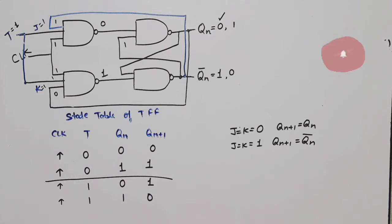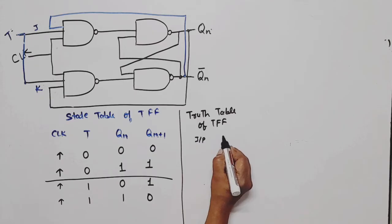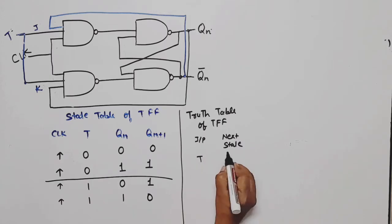So this is the state table. Input T here, and next state QN plus one here. If T is equal to zero, next state will be present state. If T is equal to one, next state will be complement of present state, meaning just opposite.